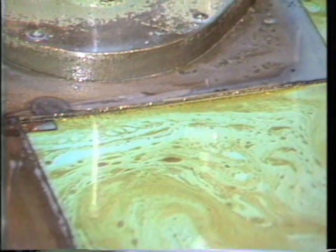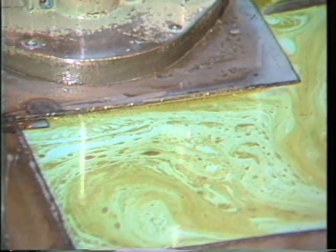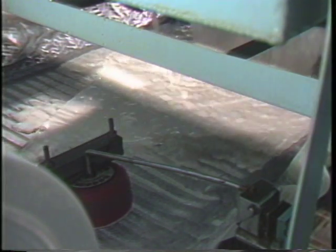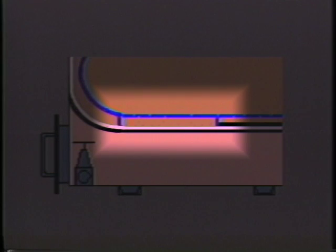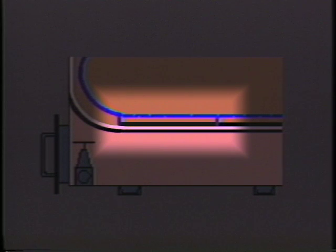Dispersed and emulsified tramp oils have been known for years to impede the filtration of water miscible coolants through all types of disposable media filters. The reason for this is simple: droplets of oil adhere to the filter media and form a waterproof barrier which resists coolant flow and causes the filter media to index prematurely.